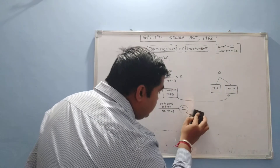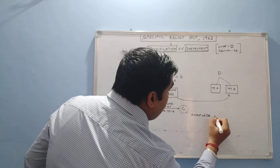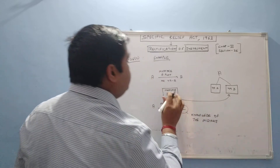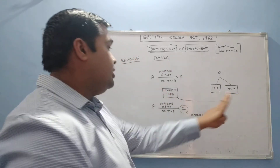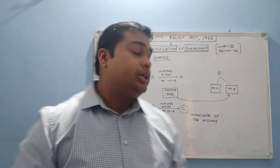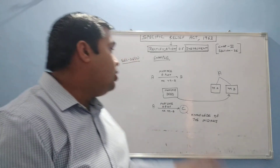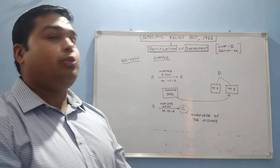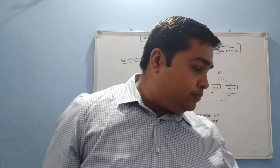However, if C had knowledge of the mistake — meaning C knew that A had committed fraud and that 49A was supposed to go to B — then it cannot be said that C acquired 49A in good faith. In that case, the court may order rectification of the instrument and give 49A to B through rectification. This is the example for Section 26 sub-clause 2. In the next part, we will cover the remaining sections.